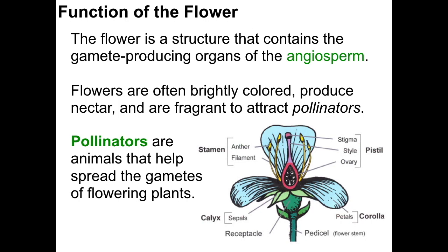Finally, we want to look at the main structure that denotes angiosperms: the flowers. Flowers are the reproductive structure of the angiosperm — the parts of the plant that produce the gametes for sexual reproduction. We often recognize flowers because they are brightly colored, produce a sweet-tasting nectar, or produce some sort of fragrance. This is an evolutionary adaptation to attract pollinators. Pollinators are animals of all kinds attracted to these flowers, often by scent or the promise of tasty nectar. When they interact with flowers, they pick up pollen from one flower and distribute it to others, allowing those plants to reproduce. Famous pollinators include bees, but many different kinds of birds and mammals are also pollinators.